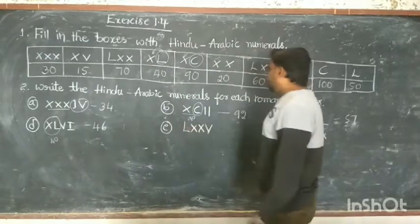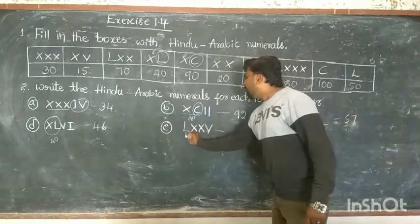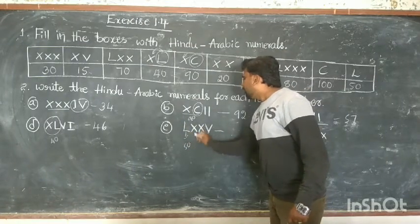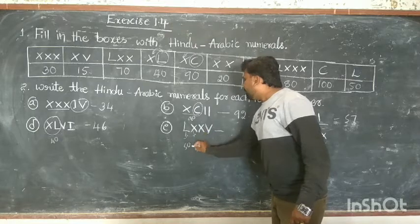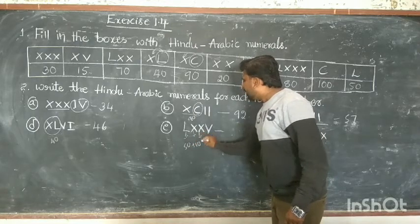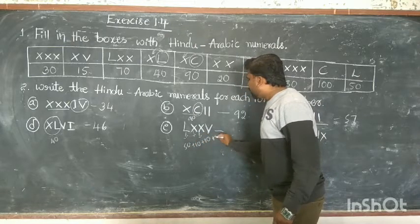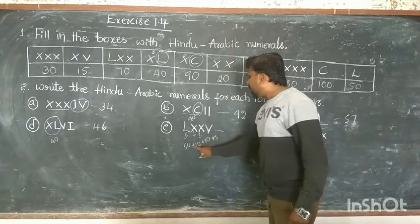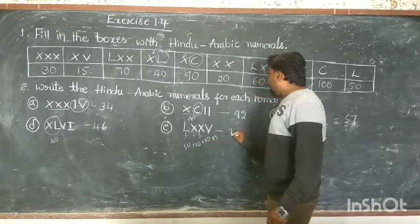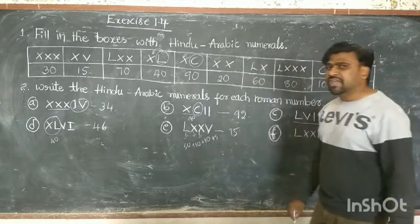Next: L means 50, plus 10, plus 10, plus 5 — so 50 plus 60 plus 70 plus 5. The final answer is 75.